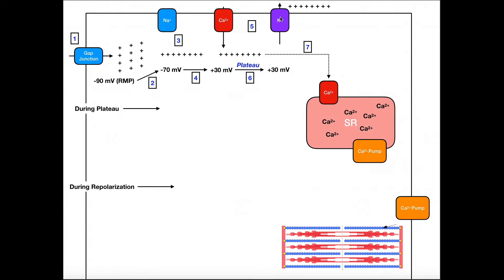When the calcium channels are open and calcium influx occurs, the calcium has another function. These calcium ions are going to trigger the release of more calcium from the sarcoplasmic reticulum. The sarcoplasmic reticulum is an organelle similar to the endoplasmic reticulum — in fact it is endoplasmic reticulum — but in muscle cells it stores calcium. So the calcium that came in through the voltage-gated calcium channel travels over and triggers the release of more calcium from the SR through its channel and into the sarcoplasm.